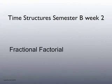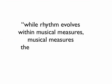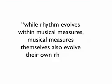On page 70 of the Schillinger System of Musical Composition, Schillinger says: while rhythm evolves within musical measures, musical measures themselves also evolve their own rhythm. And this is the essence of what he means by fractional and factorial. Factorial is the rhythm of the bars; fractional means the rhythm in the bar.